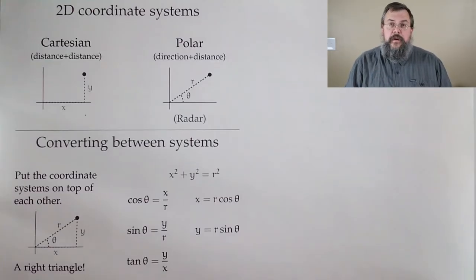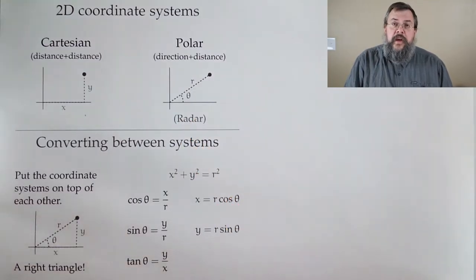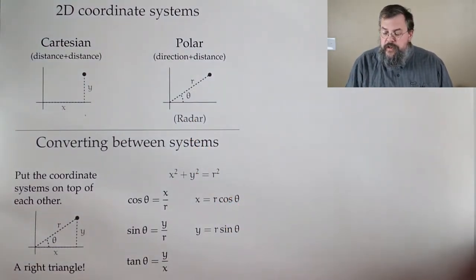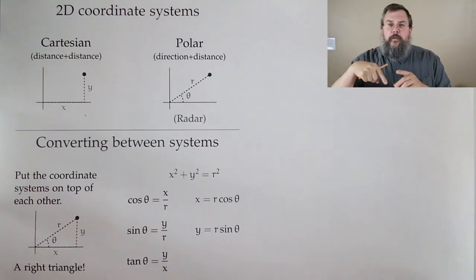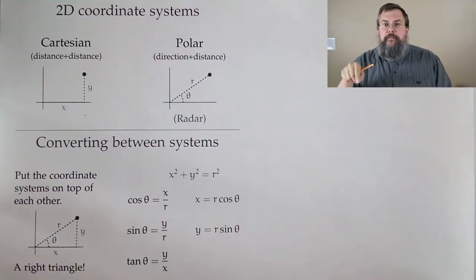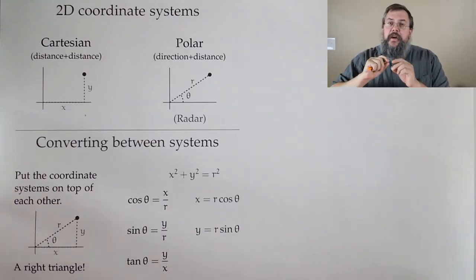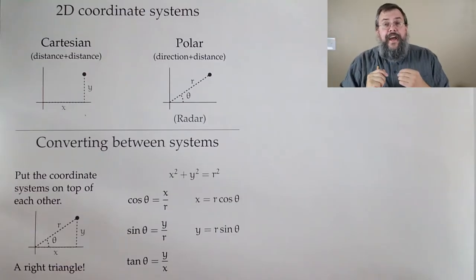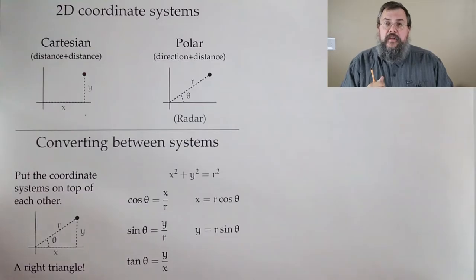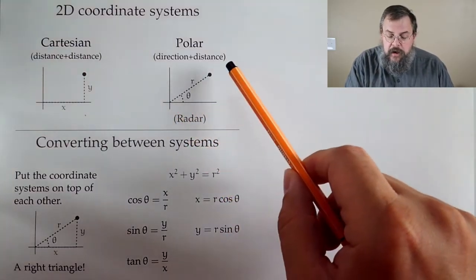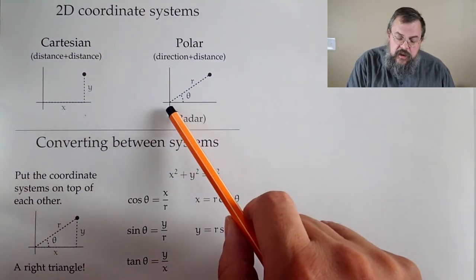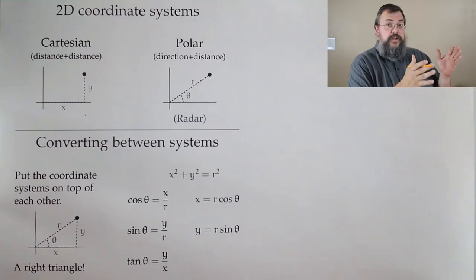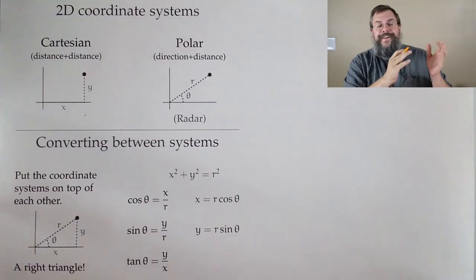The other coordinate system we often see in two dimensions is called polar. You can think of it a little like radar — like in movies with ships at sea, where there's a monitor with a sweep and little beeps indicating a direction and distance to an object. The way polar works is a combination of distance and direction. We call our distance r, and theta is our direction — it's an angle. We start at the origin, pivot until we're going in the right direction, and then move forward. That's the idea of polar coordinates.